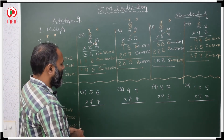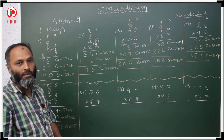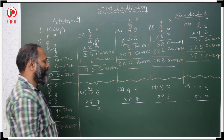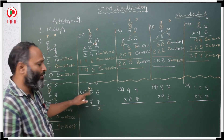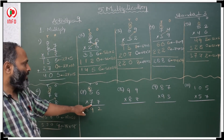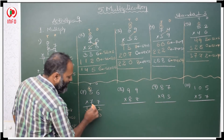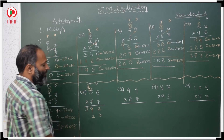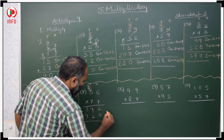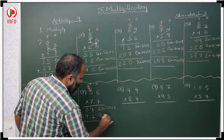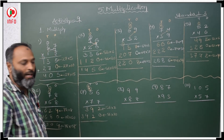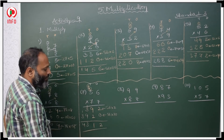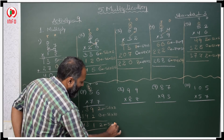Now: ones place, tens place. First 7 with 6: 7 sixes are 42, write 2 ones carry 4 tens. 7 fives are 35, 35 plus 4 is 39. Then start with 7 in tens place, keep 0 first. 7 nines are 63, write 3 carry 6; 7 sixes are 42, 42 plus 4 is 46, write 46. Add: 2 plus 0 is 2, 9 plus 2 is 11, 13, 4 — answer is 4312. This is the product of 56 with 77.